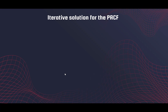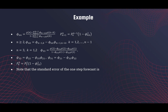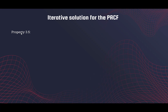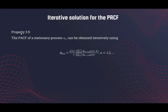The Durbin-Levinson algorithm not only computes all the coefficients and errors, but the term phi_{n,n} — the last coefficient in our prediction model — uses the same notation as the PACF. In fact, many textbooks define the partial autocorrelation function (PACF) as this last coefficient from the prediction problem. Property 3.5 states that the PACF can be obtained iteratively using this formula, so phi_{n,n} denotes both the PACF and the last coefficient in the linear prediction.